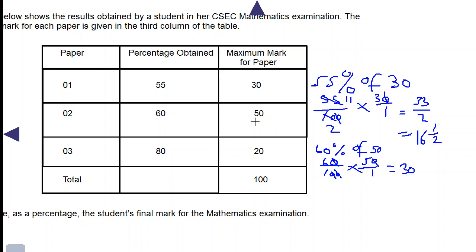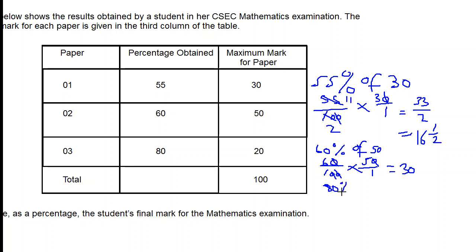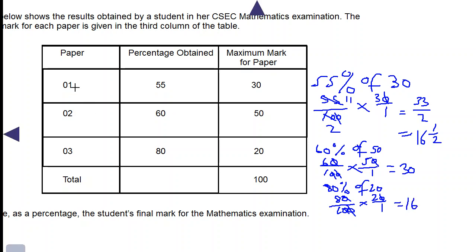Let's look at the mark for paper 3. 80% was obtained in paper 3, so we need 80% of 20. That's 80 over 100 times 20 over 1. Canceling zeros, 8 times 2 is 16. So the mark for paper 3 was 16. The mark for paper 1 was 16 and a half, paper 2 was 30, and paper 3 was 16.